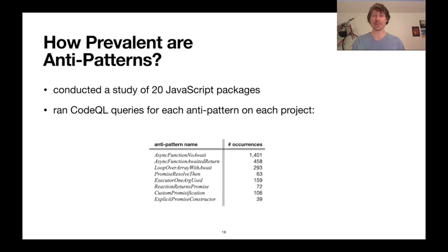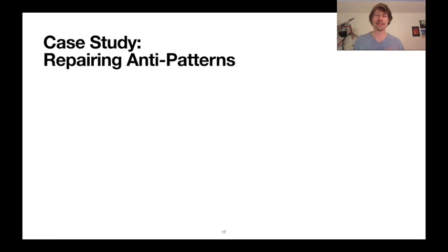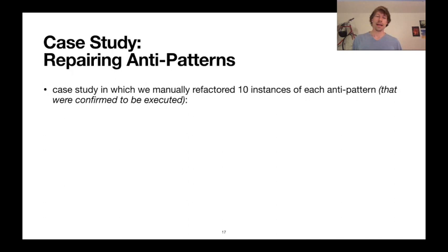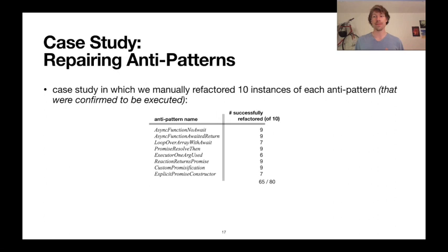But what does doing better look like — how do you fix these anti-patterns? To start, we conducted a case study in which we manually refactored 10 instances of each anti-pattern. These were instances confirmed to generate a promise at runtime using our profiling tool. When we made the fix, we wanted to make sure it preserved the functionality of the application. Overall, we refactored 80 instances of our anti-patterns and found that 65 of them — as outsiders to the project — we could manually refactor. That's really promising and very exciting.